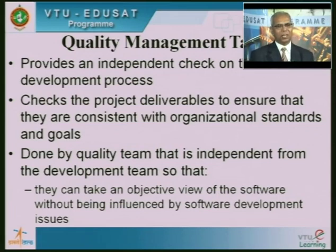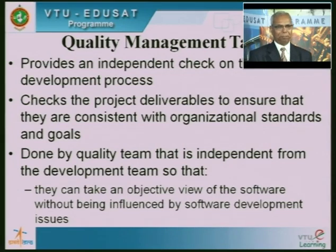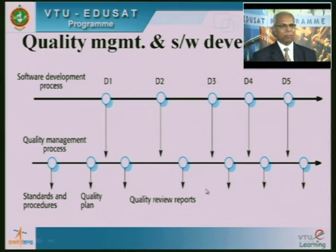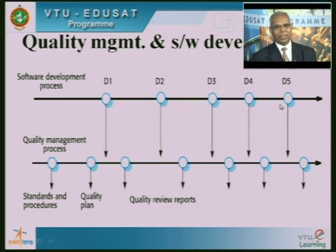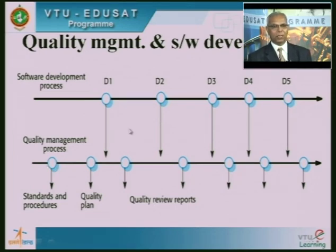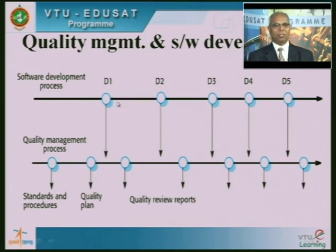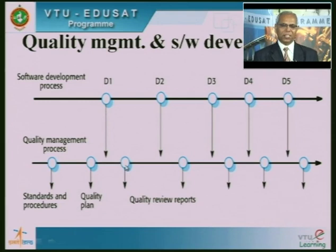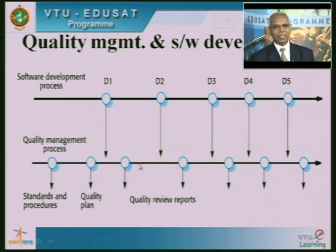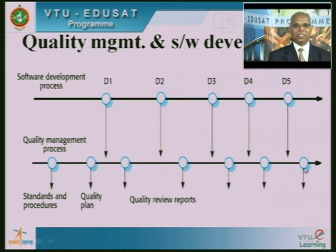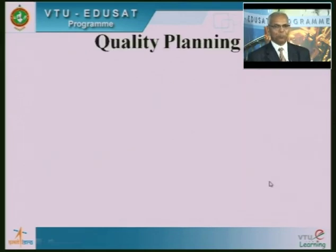The inspection process ensures quality requirements have been defined properly, no requirements have been left out, and existing requirements are not inconsistent. This is done by the quality team independent from the development team, so they can take an objective view. Quality management and quality checks are typically done by a third party. At each stage of development, there is a corresponding quality inspection to make sure quality standards are maintained and the system does not go out of control.